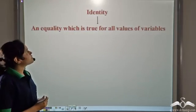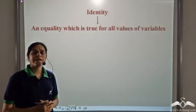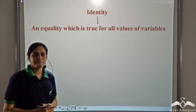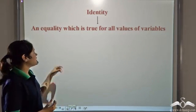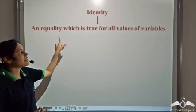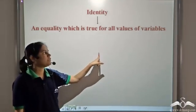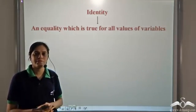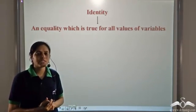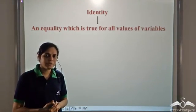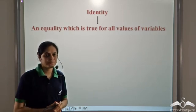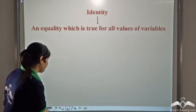First, what is an identity? An identity is an equality which is true for all values of variables. What exactly do we mean by this? Let us see.